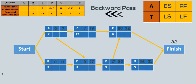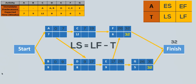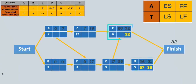Now let us do the backward pass. Since the project's completion time is 32 weeks, the latest finish times for the activities at the finish node, F and G, has to be 32. That is, F and G cannot be completed in longer than 32 weeks. We obtain the latest start times by subtracting the activity times from the latest finish. For G, the latest start time will be 32 minus 5, which gives 27. For F, the latest start will be 32 minus 6, which gives 26. Now E has two successors, F and G, with latest start times of 26 and 27 respectively. As a result, the latest time for E to finish has to be 26. When doing the backward pass, the latest finish time of an activity must be the minimum of the latest start times of its successors.